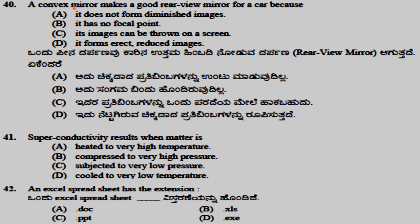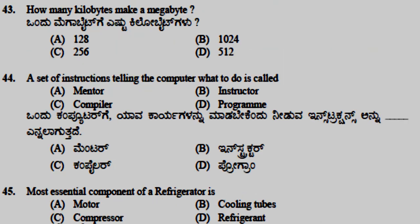A convex mirror makes a good rear-view mirror for a car because it makes an erect, reduced image. Superconductivity results when matter is cooled to very low temperature. An Excel spreadsheet has the extension .xls. 1024 kilobytes make a megabyte.